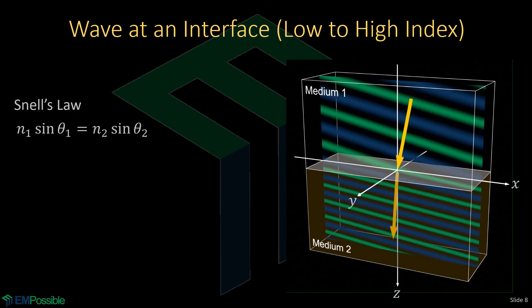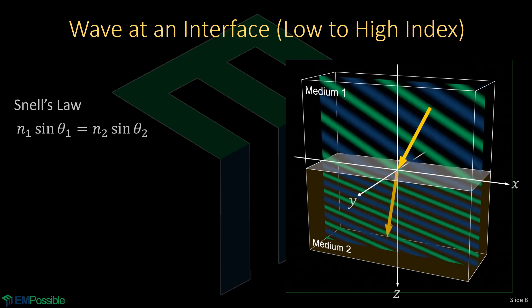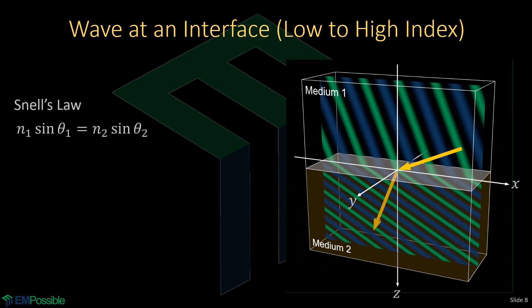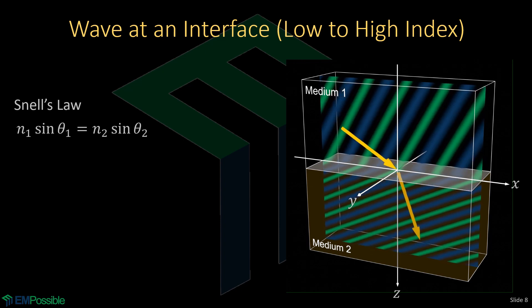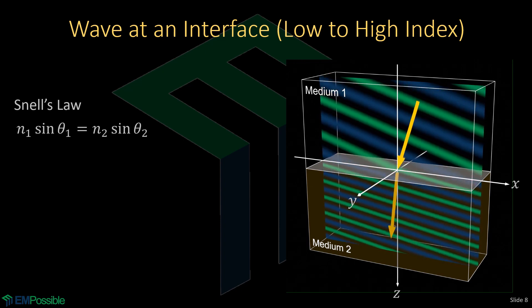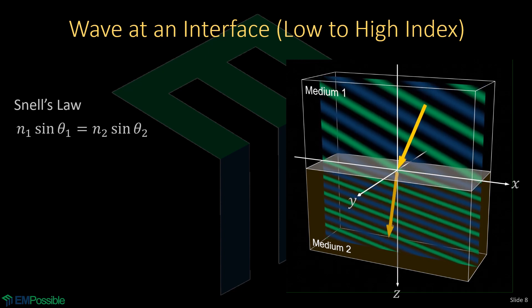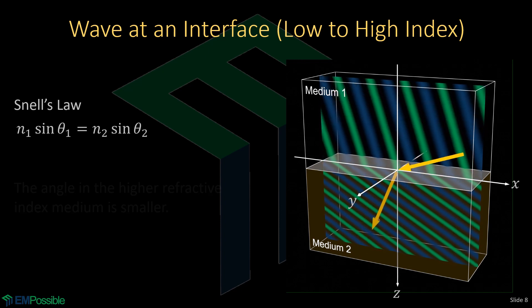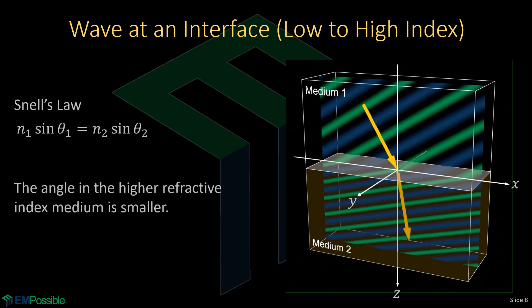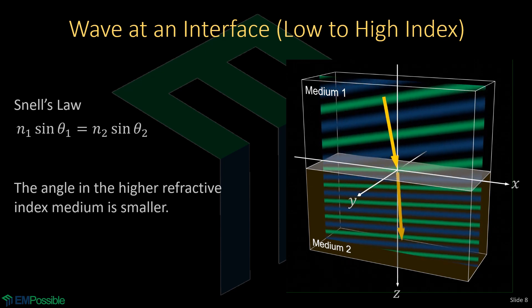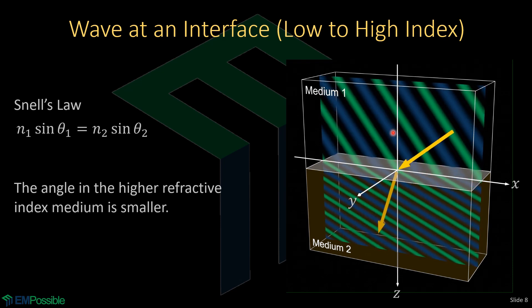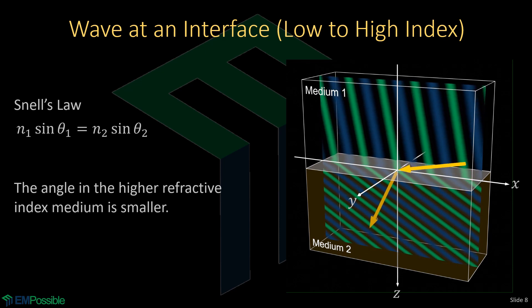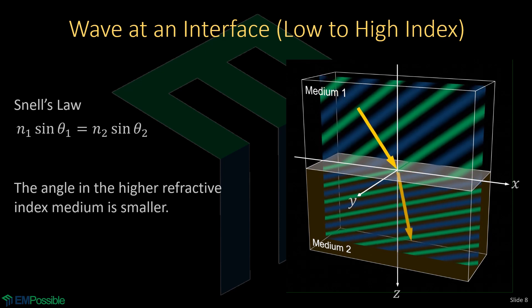We can set those two wave expressions equal right at the interface and derive an expression relating the angles and refractive indices. This is called Snell's law — it's how we quantify the angles of refraction at an interface. Looking at an animation sweeping the full range of incoming angles, the wave on the other side also has a matching angle. The angles aren't equal; it's the field on either side of the interface that matches. Importantly, the angle in the medium with the lower refractive index — medium one — always has the larger angle, except at normal incidence.